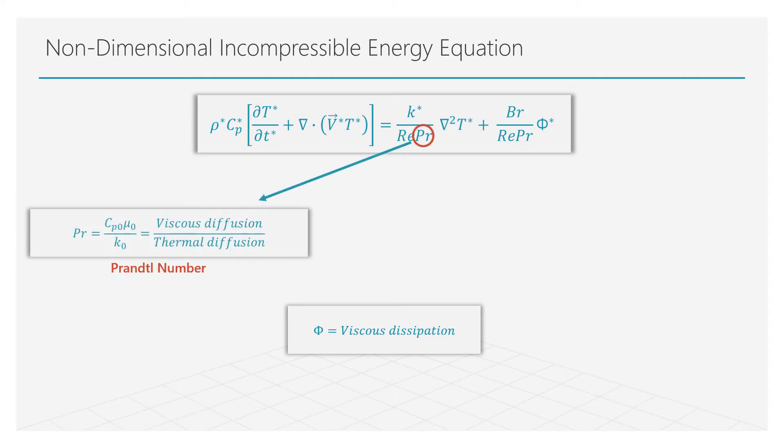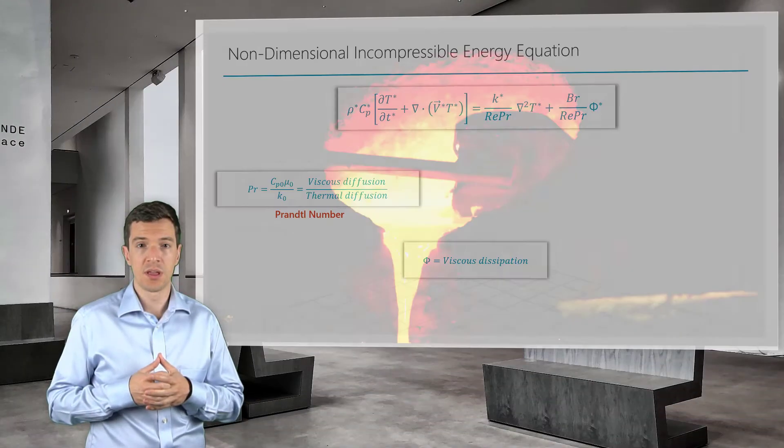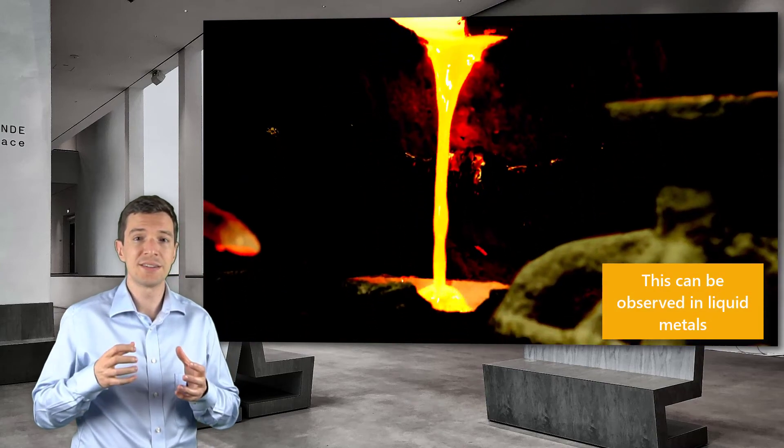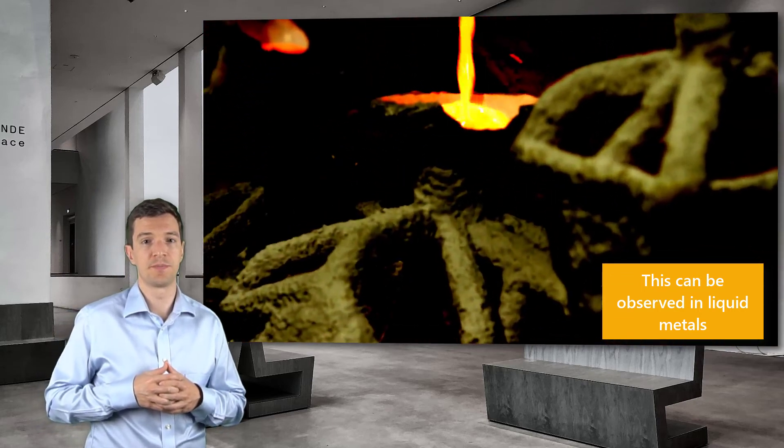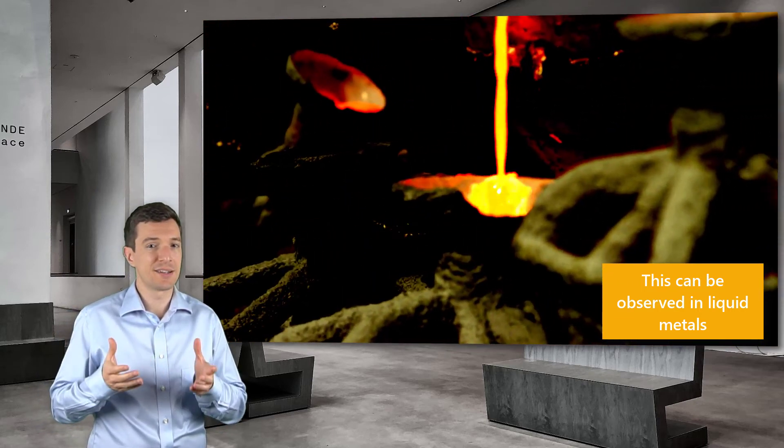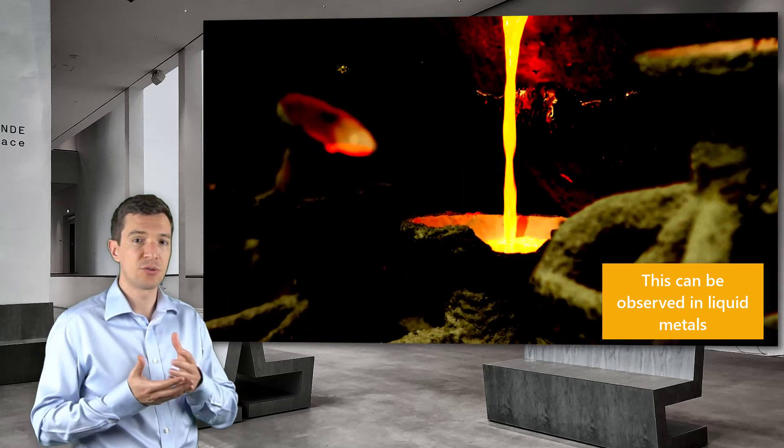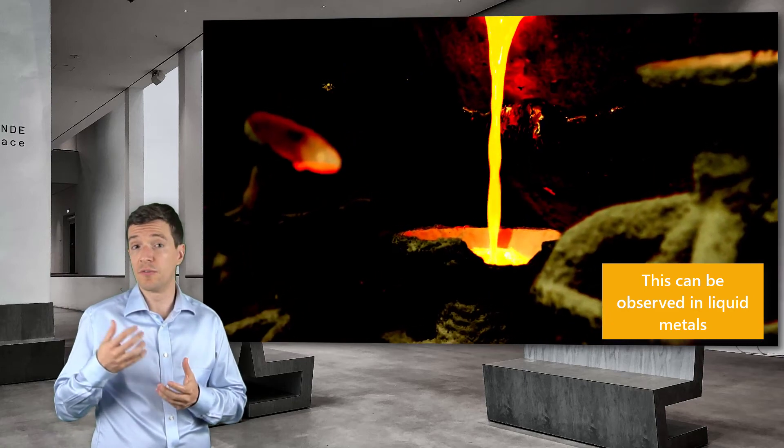The first one is the Prandtl number, that represents the ratio between viscous diffusion and thermal diffusion. This means that if the Prandtl number is less than 1, thermal diffusion is larger than the viscous diffusion, meaning that the heat propagates through the flow faster than the flow motion. This essentially tells us that the heat transfer through the fluid mostly happens through conduction instead of convection.